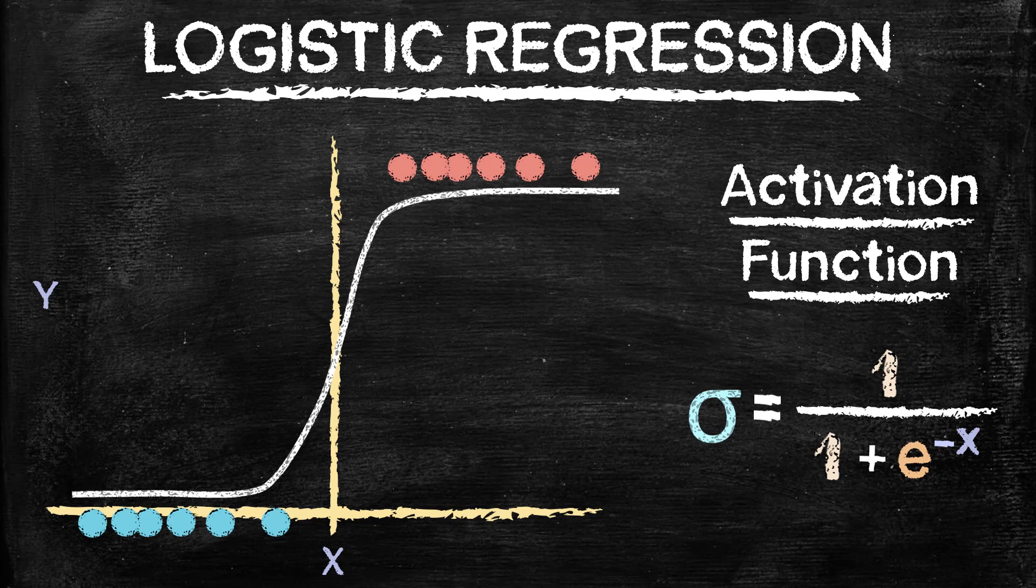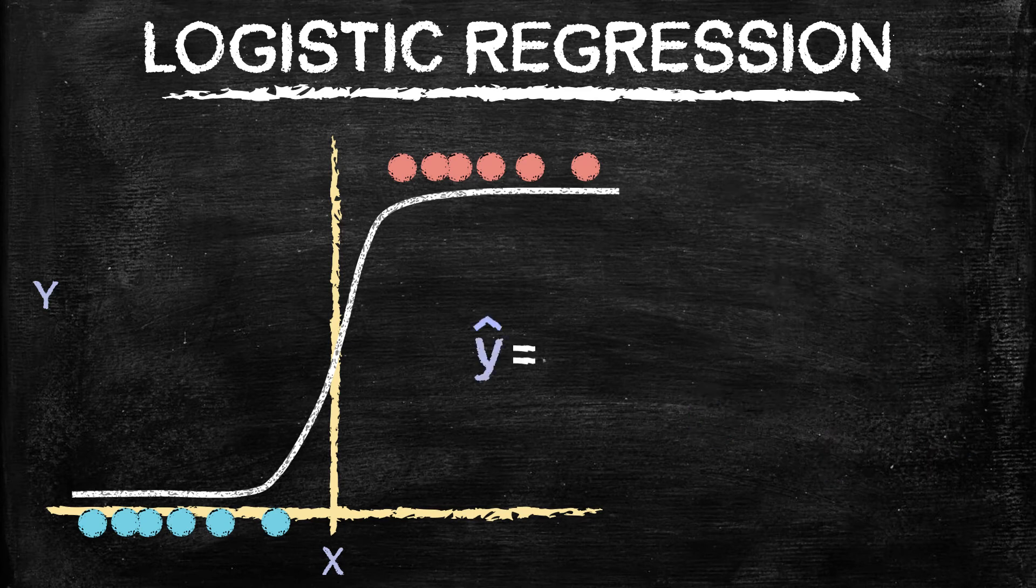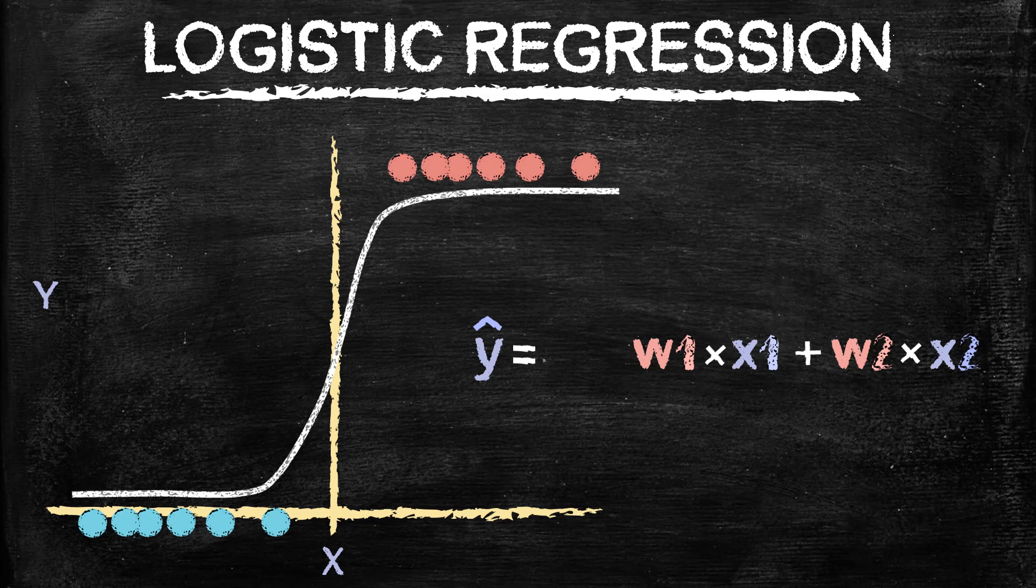So how do we do that? Well, we're going to take the y hat values, so the predicted values. And those are going to be equal to, like the linear regression, the weights times the input features for however many that you have. But what we're going to do is we're going to pass all of that through our activation function in order to make it look like this.